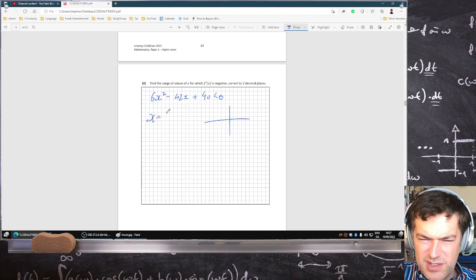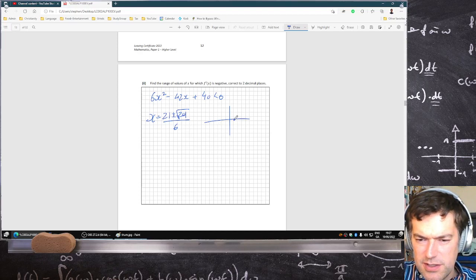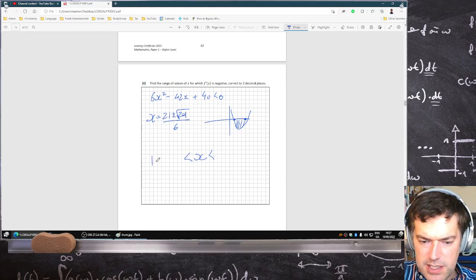You've got x equals 21 plus or minus root 201 over 6. So there's two solutions here. And we want to be negative. So we want to be under. So the x has to be between these two values to two decimal places.